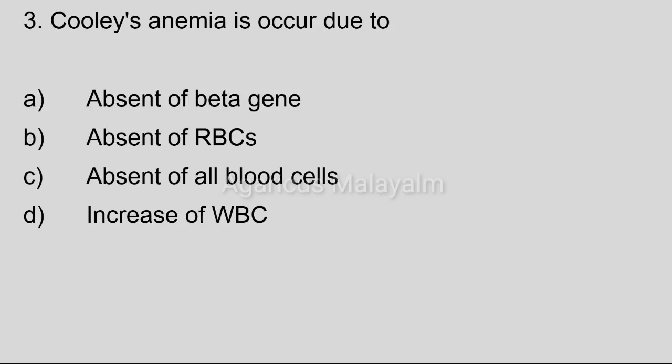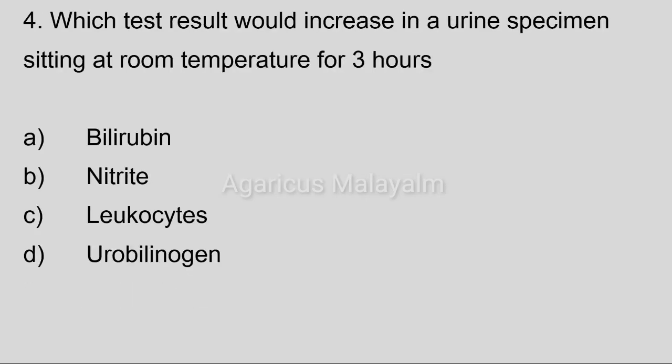Correct answer: Option A, absent of beta gene. Fourth question: Which test result would increase in a urine specimen sitting at room temperature for 3 hours?